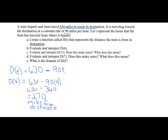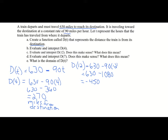Now they want us to do D of 12, and ask whether it makes sense. Substituting 12 for T: 630 minus 90 times 12. 90 times 12 is 1,080, so 630 minus 1,080 gives us negative 450. For our situation, does that make sense? When we reach our destination, the mileage should be zero. Negative 450 means we've gone too far, so D of 12 can be evaluated but it doesn't make sense for our problem.